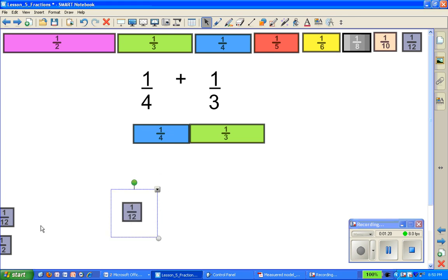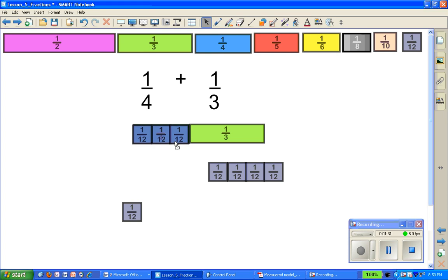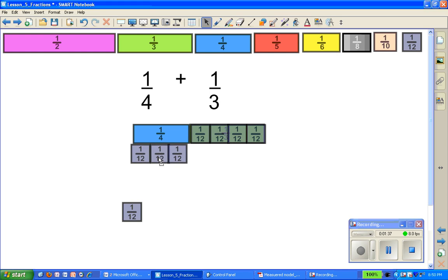And with some trial and error they will eventually come to the realization that twelfths fit into both pieces. So there's 3 twelfths the same as 1/4 and 4 twelfths are the same as 1/3.